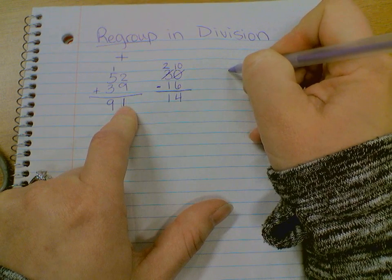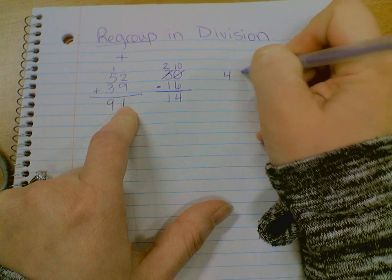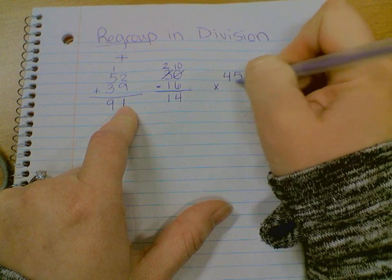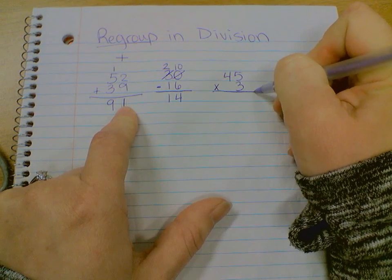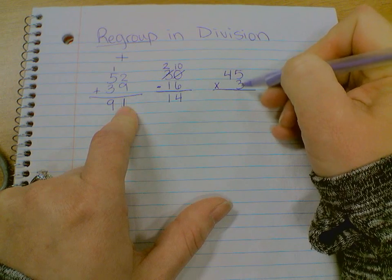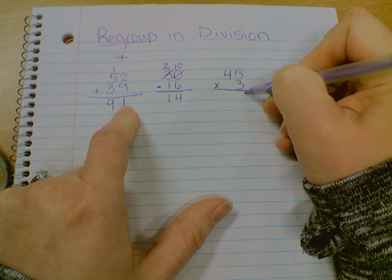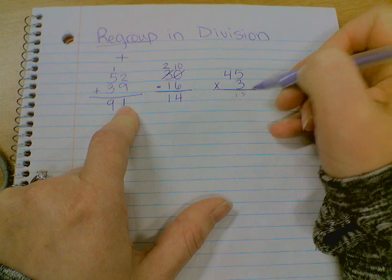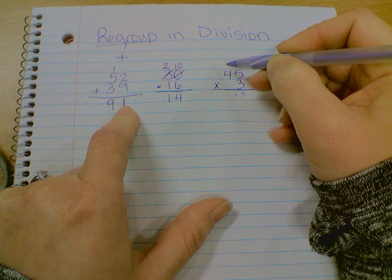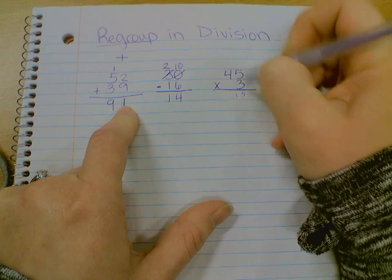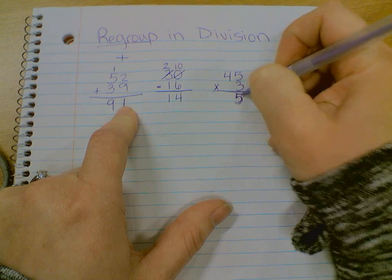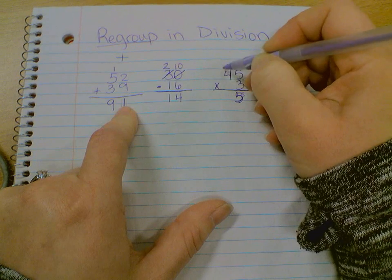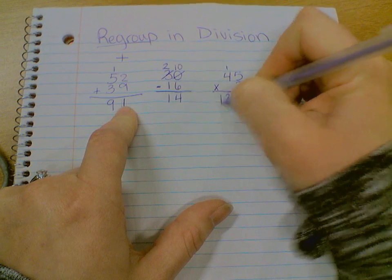Let's say that we're doing 45 times three. Well, three times five is 15. I can't place a two-digit number right there in the ones place, so I have to carry that one to the next column, and we call that regrouping. And continue solving, and I get 135.